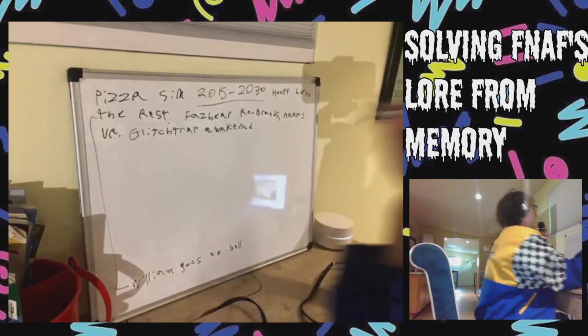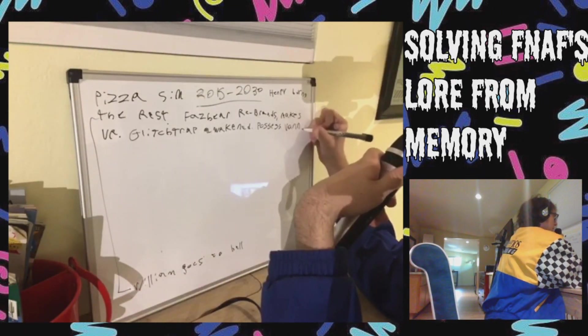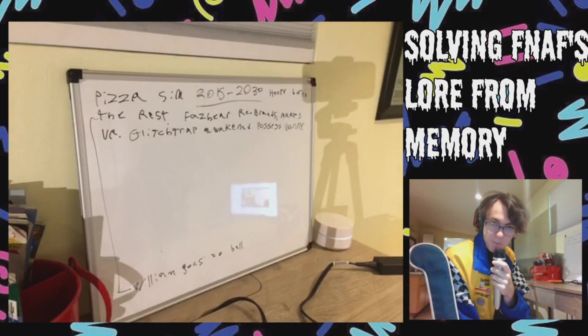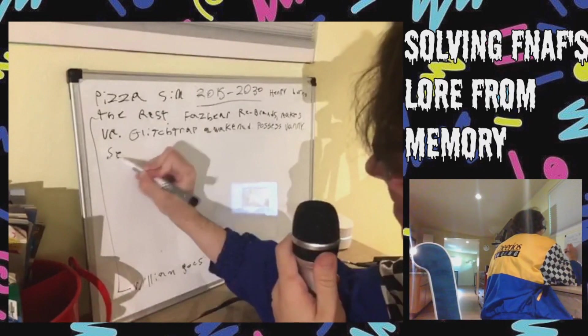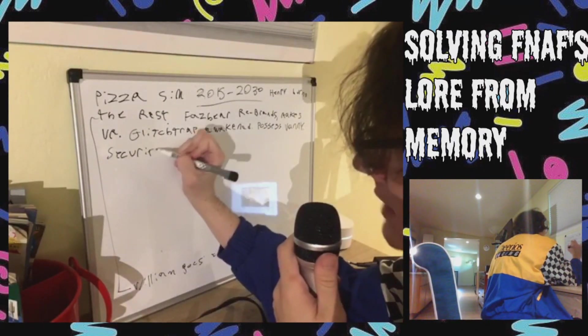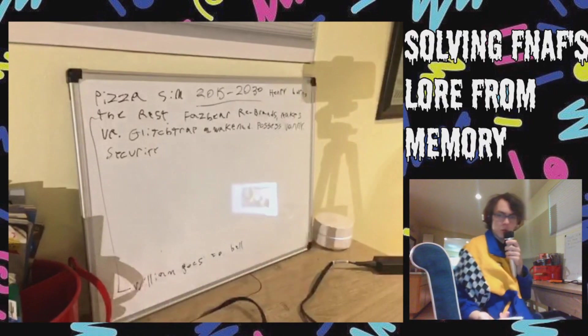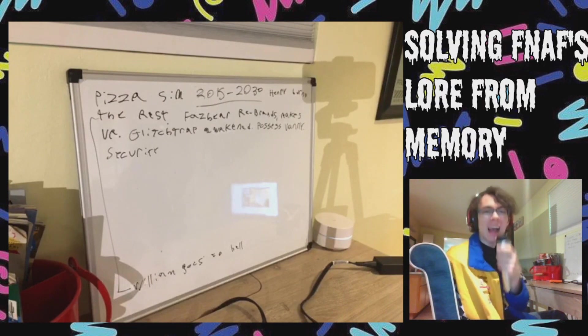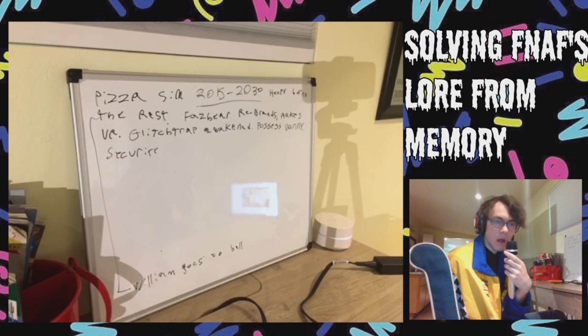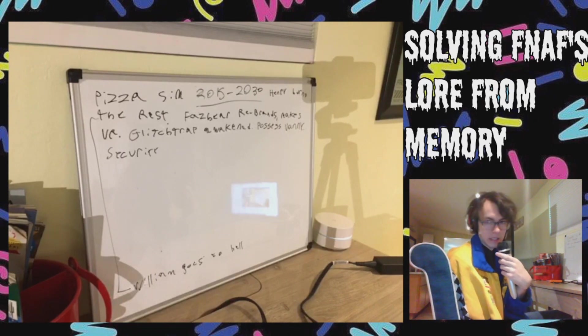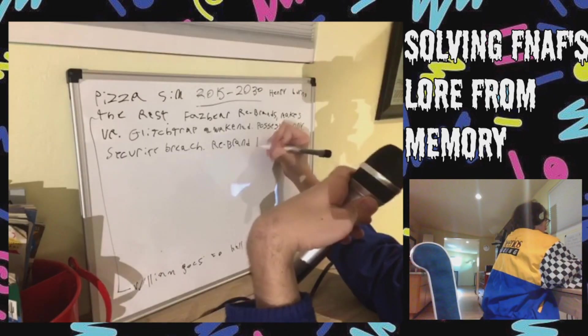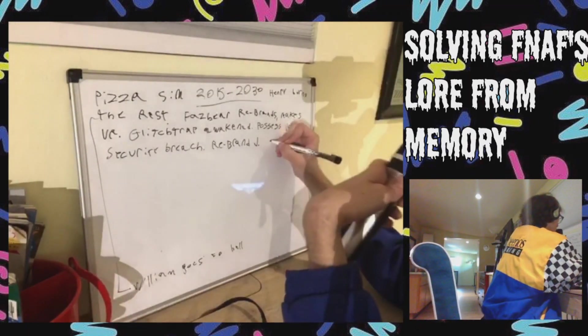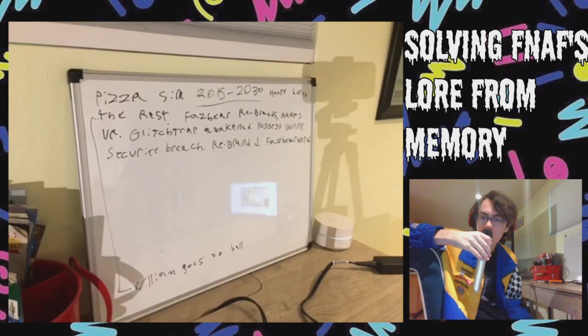William goes to hell. William Goes to Hell is basically, I mean technically he's dragged into some purgatory created by one of the souls of Golden Freddy. But like whatever man. Glitchtrap is awakened. He possesses Vanny, who is one of the game devs. And that's where we are at Security Breach. Then Security Breach happens. I guess the rebrand was successful? Rebrand went well for Fazbear Corporation. And I guess that means that they basically started their own Disney World.